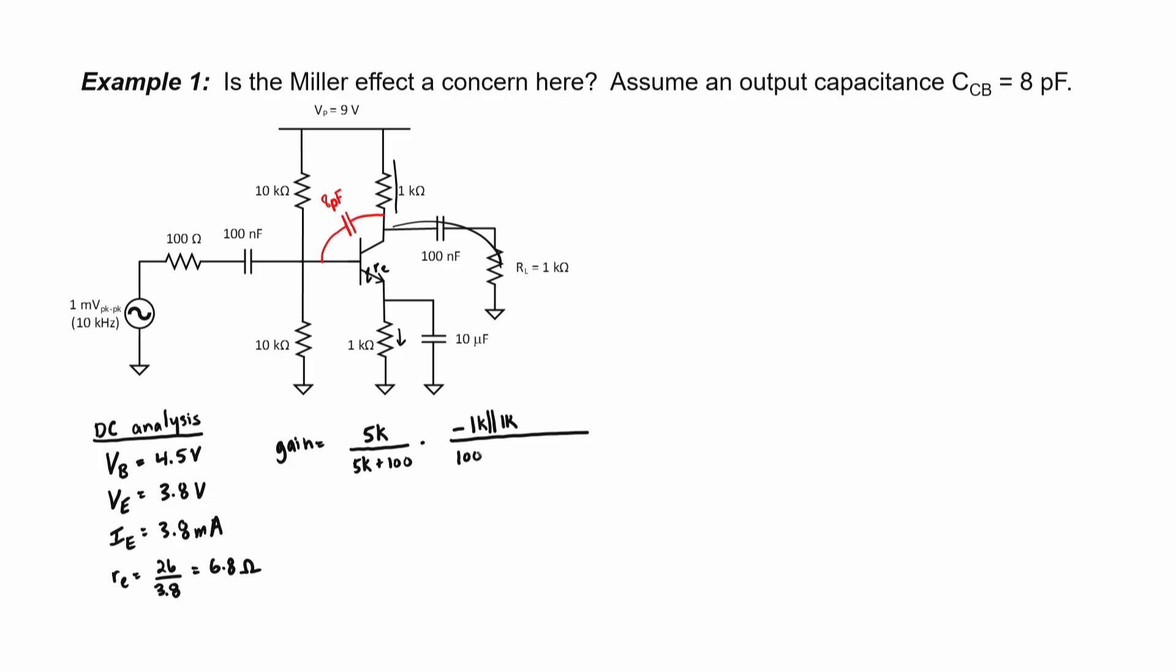So, for the base, we have 100 in parallel with 10kohms, in parallel with 10kohms. And we're going to reflect that over to the emitter side by dividing it by beta. That's in series with r sub e, and then that's attached to an AC ground. So the gain works out to be about minus 63. That's very typical for a gain of a common emitter amplifier when you're shorting the emitter resistor like that.